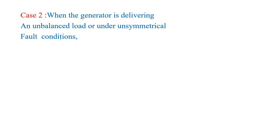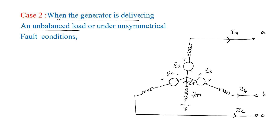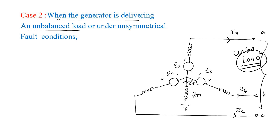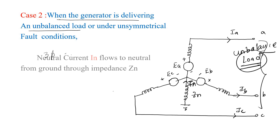Case two: when the generator is delivering an unbalanced load, there will be some neutral currents in the system. Similarly, under unsymmetrical fault conditions — which include all shunt faults except the three-phase fault — the neutral current IN flows from the ground to the neutral point.